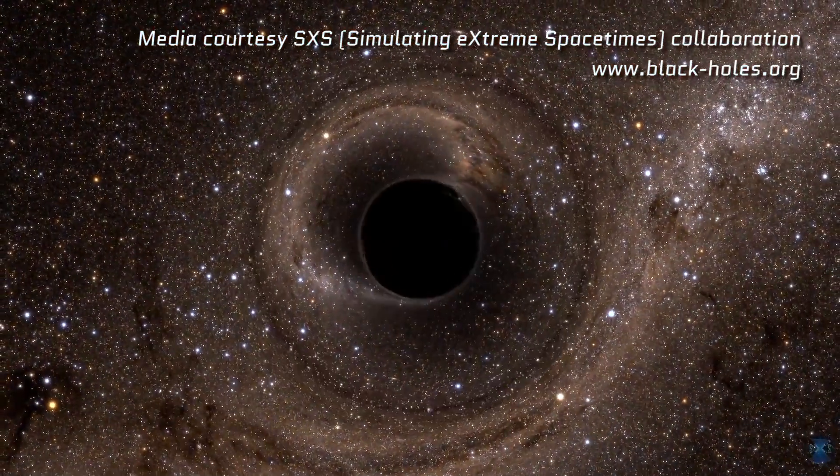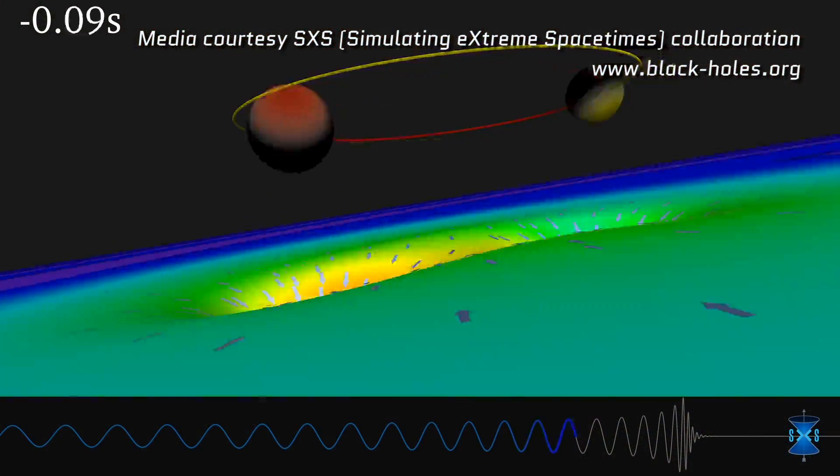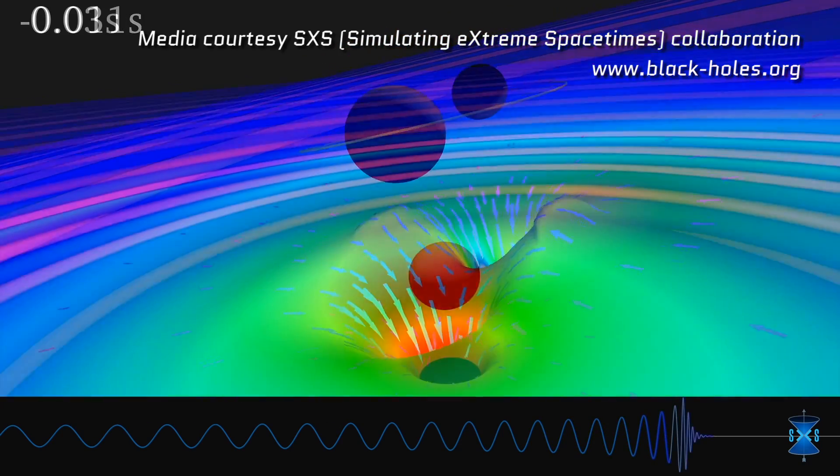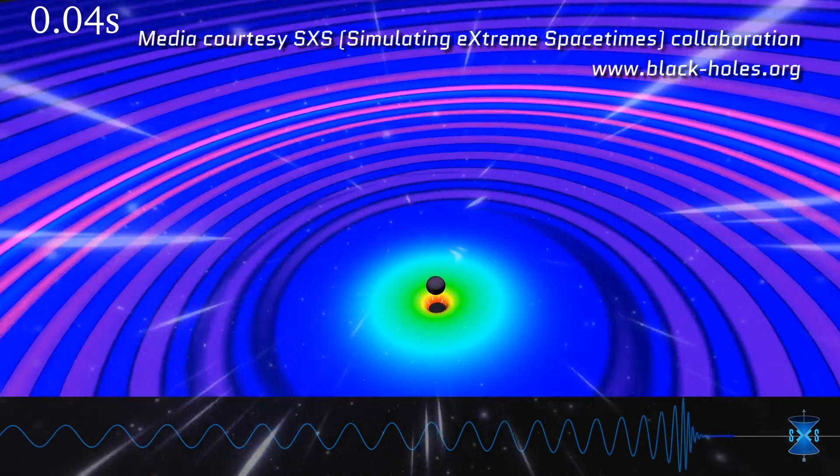Now this was an idea Einstein had where giant, violent activities in the universe, like black holes colliding, or neutron stars rotating around each other rapidly, would cause ripples in spacetime. And those ripples would move out from the source at the speed of light. And those ripples are what we call gravitational waves.